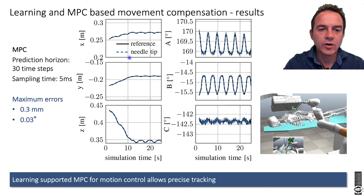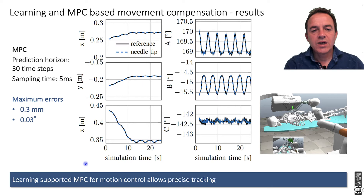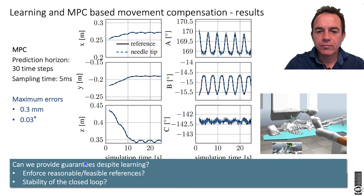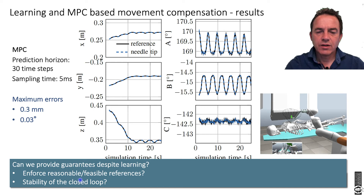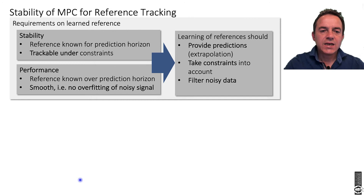The learning-supported MPC with motion compensation by learning allows very precise tracking. But wait — I have been talking about providing guarantees, and there are no guarantees yet. The actual question comes up: can we enforce guarantees? Can we enforce repeated feasibility and stability of the closed loop? And actually, yes, you can do that.